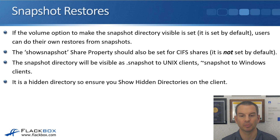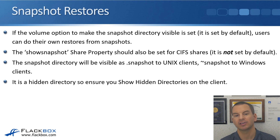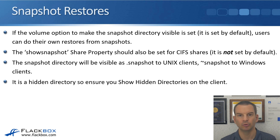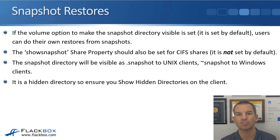The show snapshot share property should also be set for CIFS shares, and it is not set by default. For Unix and Linux clients, you just need to make the snapshot directory visible on the volume, and they will be able to see it. For Windows hosts, you have to enable it on the volume and also on the share level. It's enabled by default on the volume, but not by default on the share. So if you set things up, go on a Windows host, and cannot see the snapshot directory, the first thing to check is that you enabled it on the share.